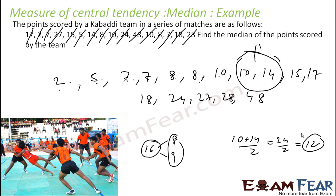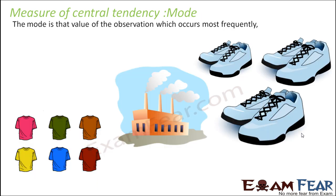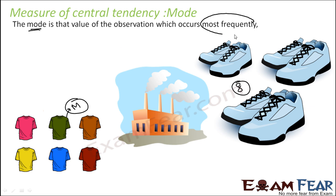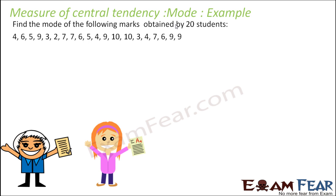The mode, as I mentioned, is the observation that occurs most frequently. It is used typically by factories to decide — for example, which shoe size to make based on the mode. If size 8 is most in demand, they'll make more of size 8. Or in t-shirts, if medium size is more in demand, they'll make more of that. It's also used for voting — for example, deciding the best teacher award. Mode is most frequently occurring value — please remember that.